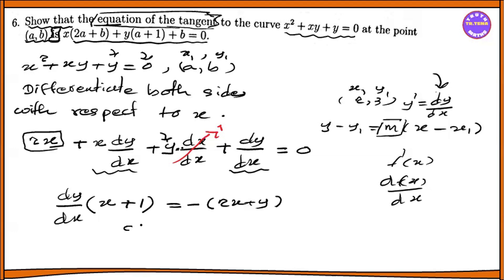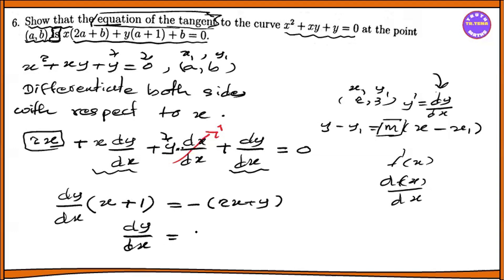dy by dx, then dy by dx times (x plus 1). So dy by dx equals minus (2x plus y) divided by (x plus 1).